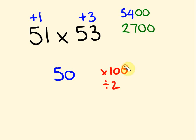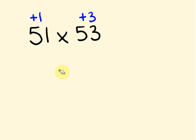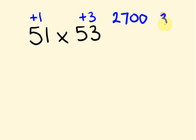So to recap: 51 plus 53, we get the cross-sum of 54. Times that by 100: 5,400. Then halve it to get 2,700. You can times by 100 first then halve, or halve first then times by 100 — it doesn't matter. Then multiply the two offsets: 1 times 3 is 3. We add that on because it's positive, so 2,700 plus 3 gives us the answer 2,703.